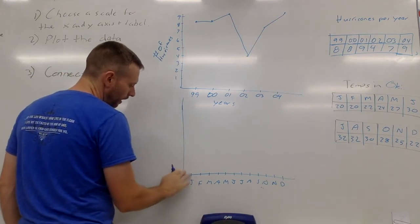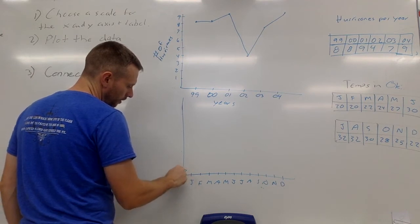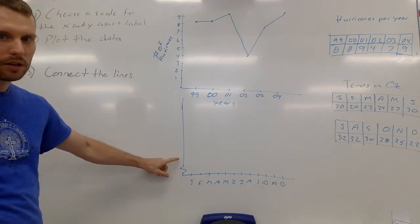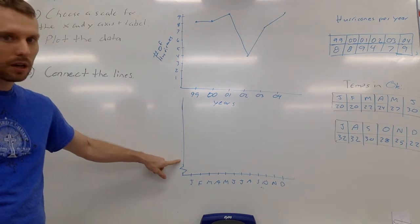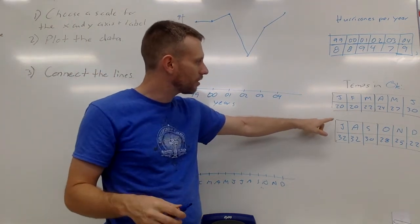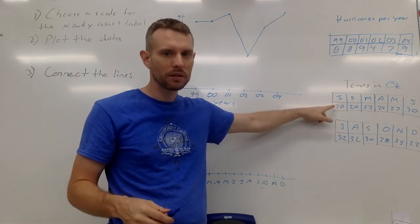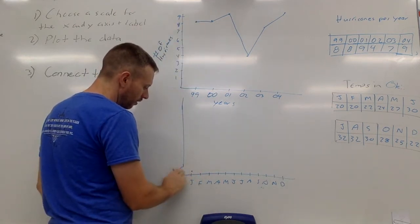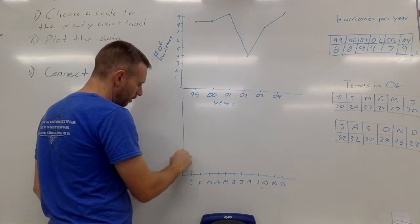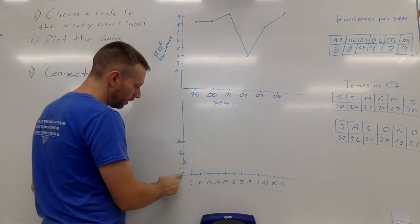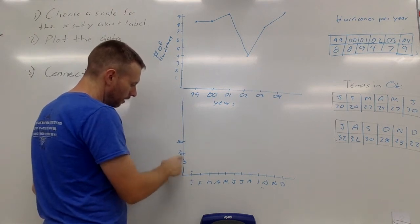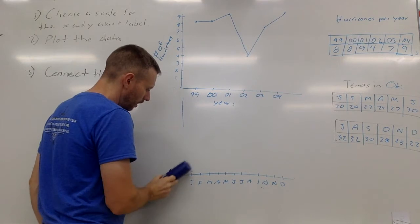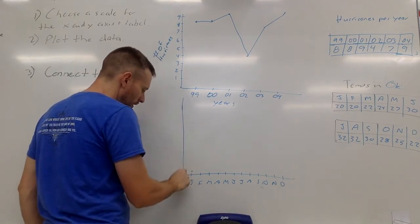Now this is important: a break, represented by a little zigzag, can only happen between the origin and your first number. You can't - if there was some crazy month in here like January and it was like zero degrees, and then all the rest was like 20 - I can't say, well, here's January is zero, and then break my graph here and start at 20 and then 30. You can't do zero and then a break and then 20, 30. The break has to be between zero and the first number.